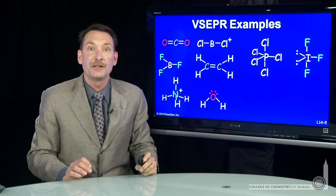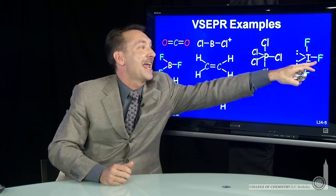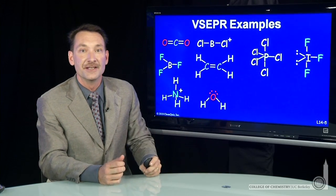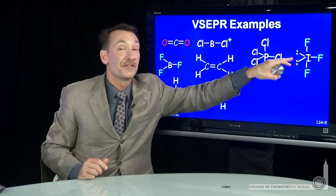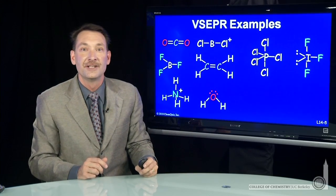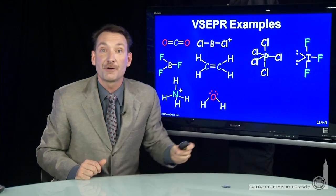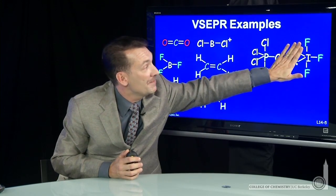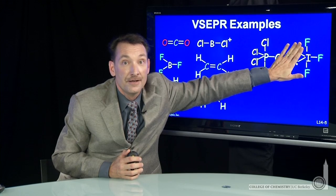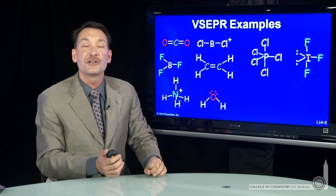Now, another trigonal bipyramidal arrangement of things, lone pairs and atoms, is IF3. In this case, two of the things are lone pairs. So this molecule, like water, has a trigonal bipyramidal arrangement of electron pairs, but we call this molecule, we name it ignoring the electron pairs. Ignoring the electron pairs, that molecule looks T-shaped.